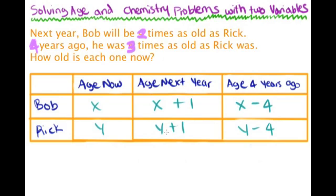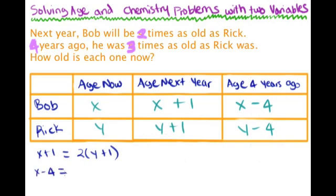Now we can make our equations. The first equation is for next year — looking at the second column: Bob will be two times as old as Rick, so x plus one equals two times (y plus one). The second equation is four years ago — looking at the third column: x minus four equals three times (y minus four).